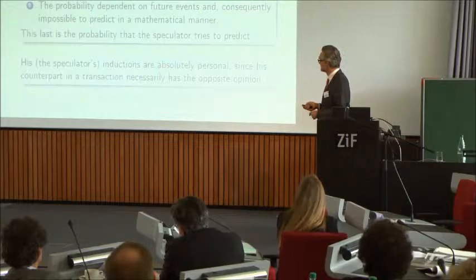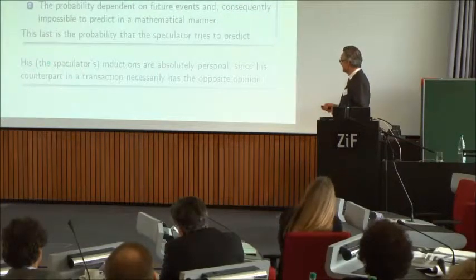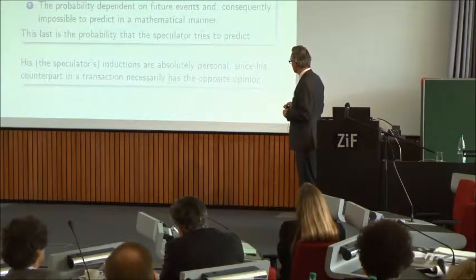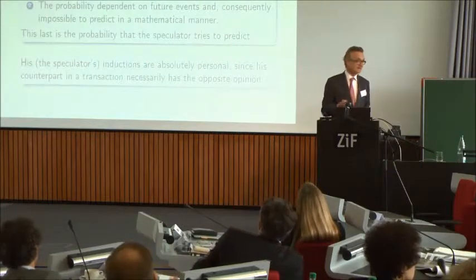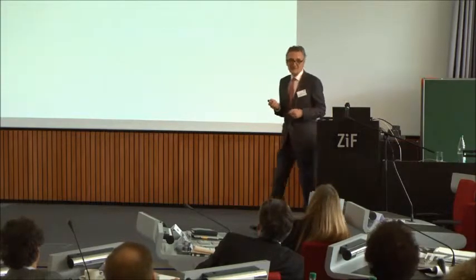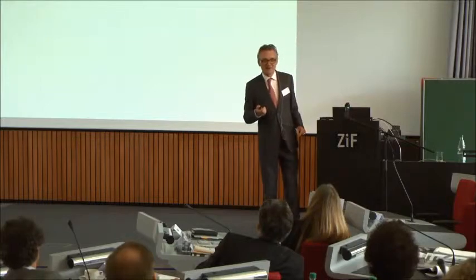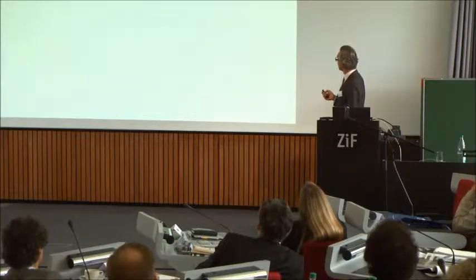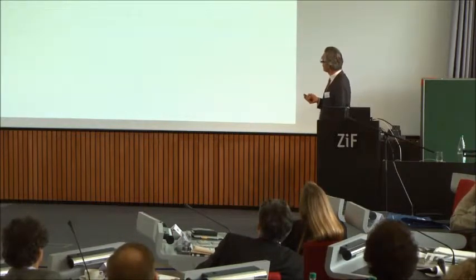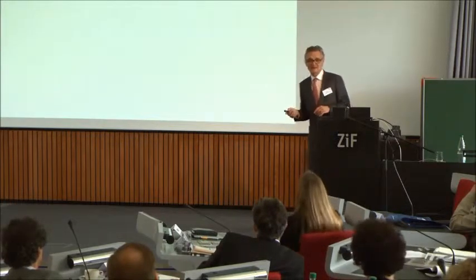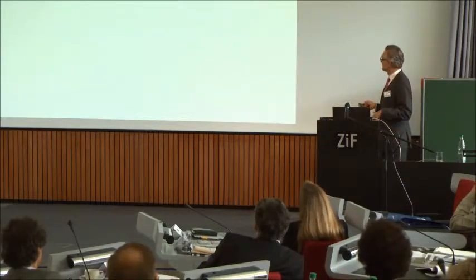He contrasts subjective probability with the probability that might be called mathematical — which can be determined a priori and is studied in games of chance. In hindsight, with some goodwill, you can see here on one side the personal probabilities and on the other the risk-neutral probability, or the pricing probability as we call it today. He even uses the word 'personal': the inductions of the speculators are absolutely personal, since his counterpart in the transaction necessarily has the opposite opinion.